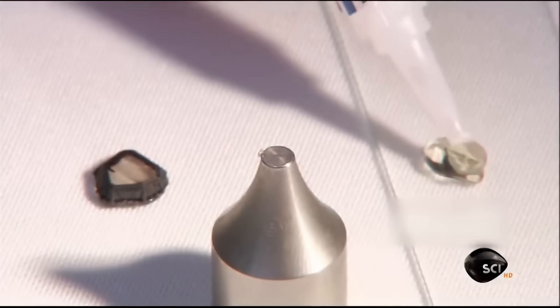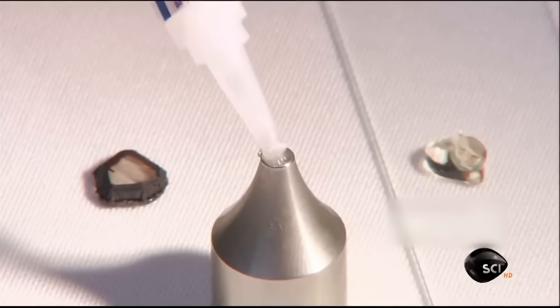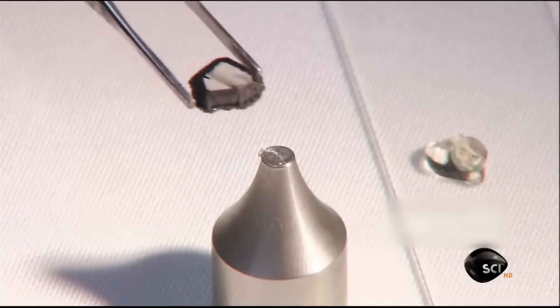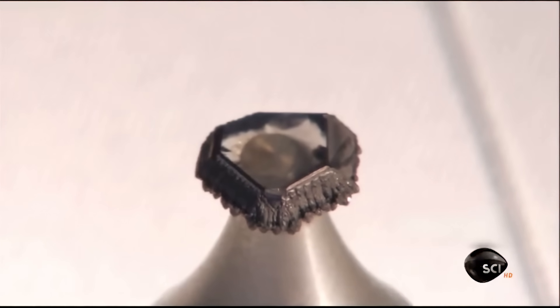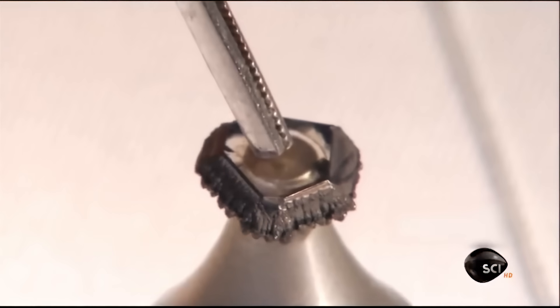In a desperate bid to fix their mistake, the factory dabs superglue on the end of a shiny steel rod, and then affixes the ruined diamond to it, hoping this will confuse buyers into thinking it's one giant diamond.